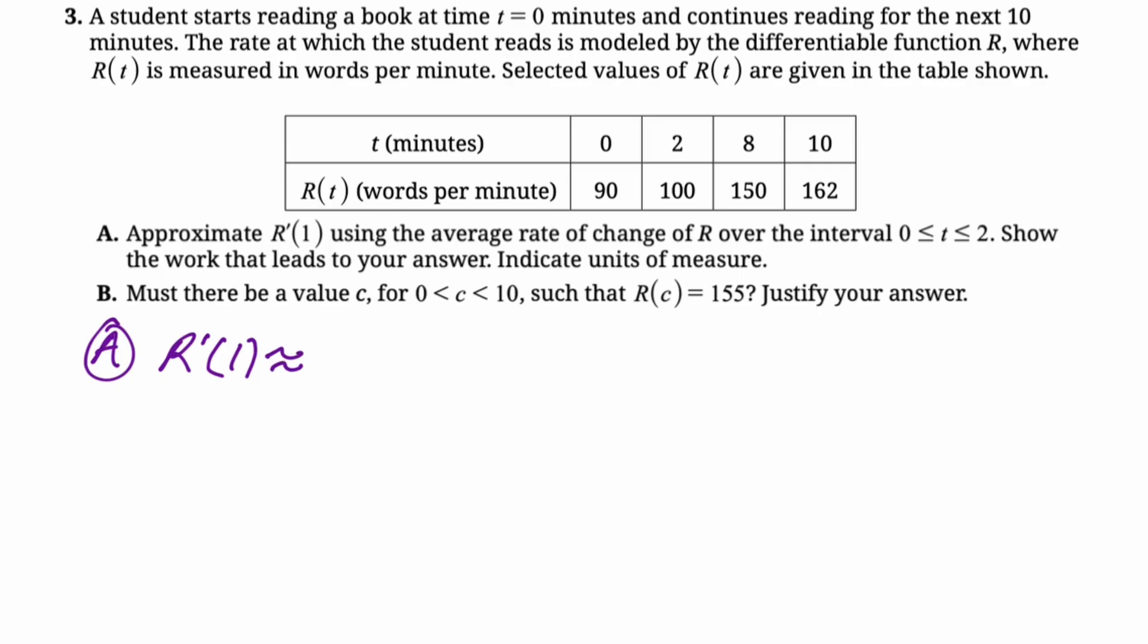So we're just going to say that r prime of one is approximately equal to, you got to nail that. And then it's just going to be the average rate of change. That's algebra one slope.